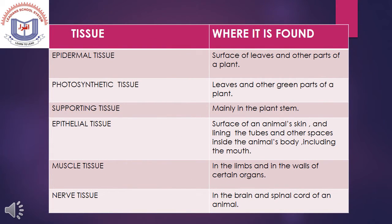Tissues and where they are found: Epidermis tissue is found on the surface of leaves and other parts of the plant. Photosynthetic tissue is found in leaves and other green parts of the plant. Supporting tissue is found mainly in the plant stem. Epithelial tissue is found on the surface of an animal's skin and lining the tubes and other spaces inside the animal's body, including the mouth. Muscle tissue is found in the lips and walls of certain organs. Nerve tissue is found in the brain and spinal cord of an animal.